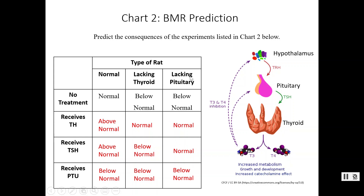The no-pituitary rat started below normal. Giving it thyroid hormone directly normalizes the BMR. Giving TSH to this rat stimulates the intact thyroid to produce its own thyroid hormone, so BMR returns to normal. PTU keeps all three rat types below normal since it inhibits thyroid hormone. If your answers don't match, go back and re-listen. Make sure you understand this pathway thoroughly.